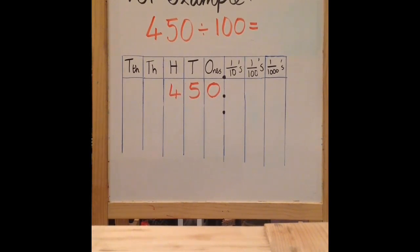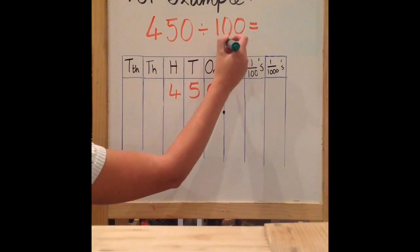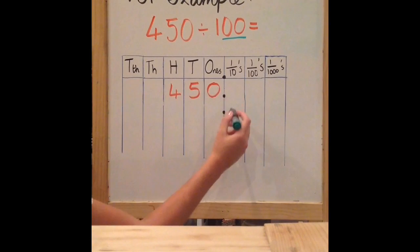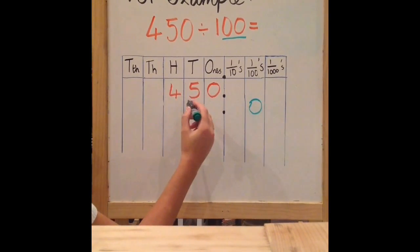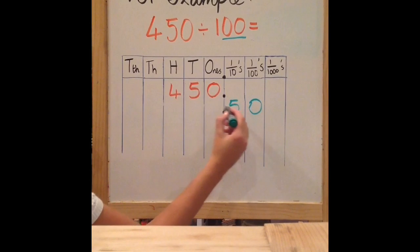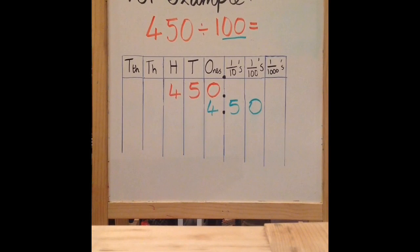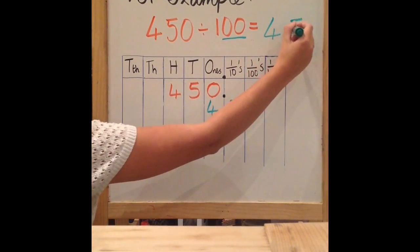The next calculation is 450 divided by 100. Because I'm dividing, I know my number is getting smaller, so I need to move my digits to the right. 100 has two zeros, so I'm moving each digit two places to the right. My 0 moves from the 1's to the 100's column, my 5 moves from the 10's to the 1's column, and my 4 jumps two places from my 100's to my 1's. So I have 4.50, which is the same as 4.5. So 450 divided by 100 is 4.5.